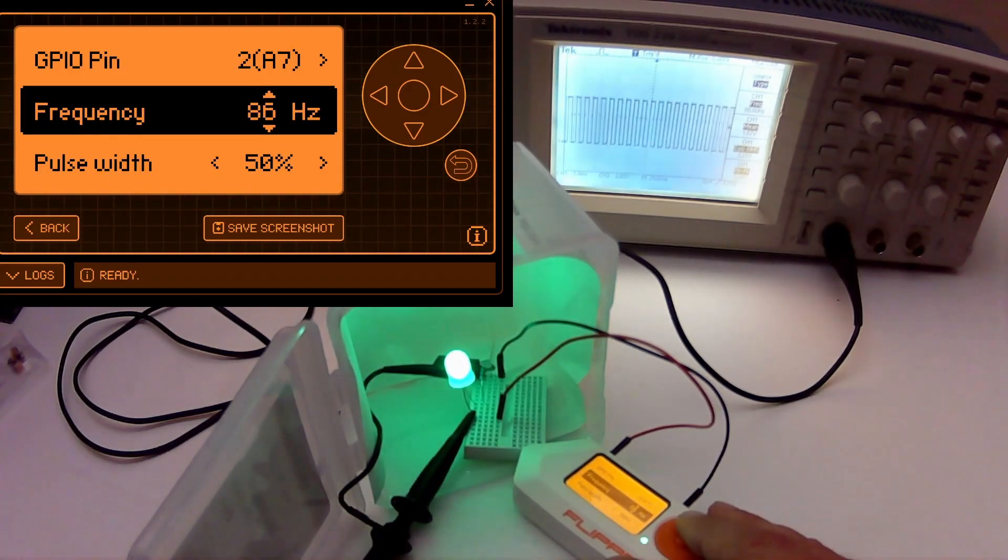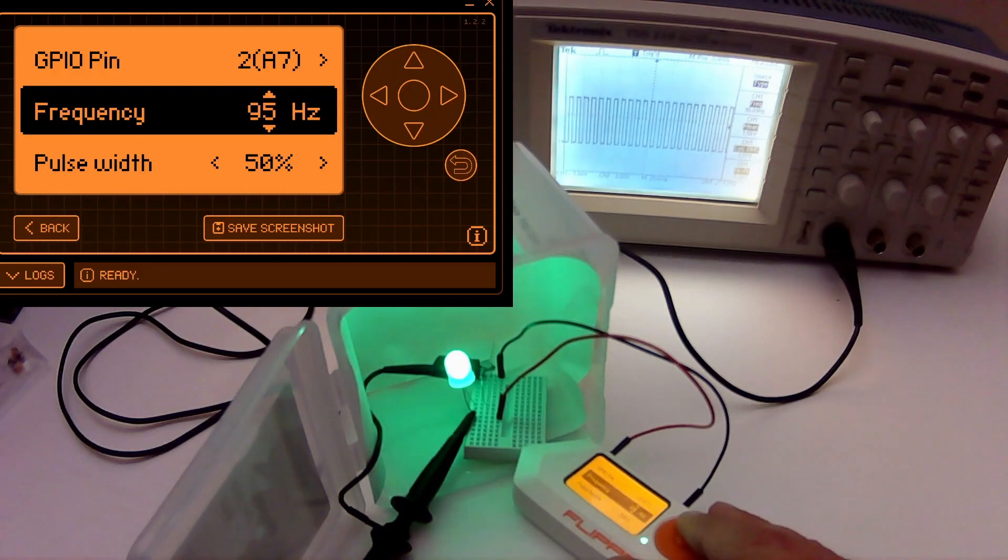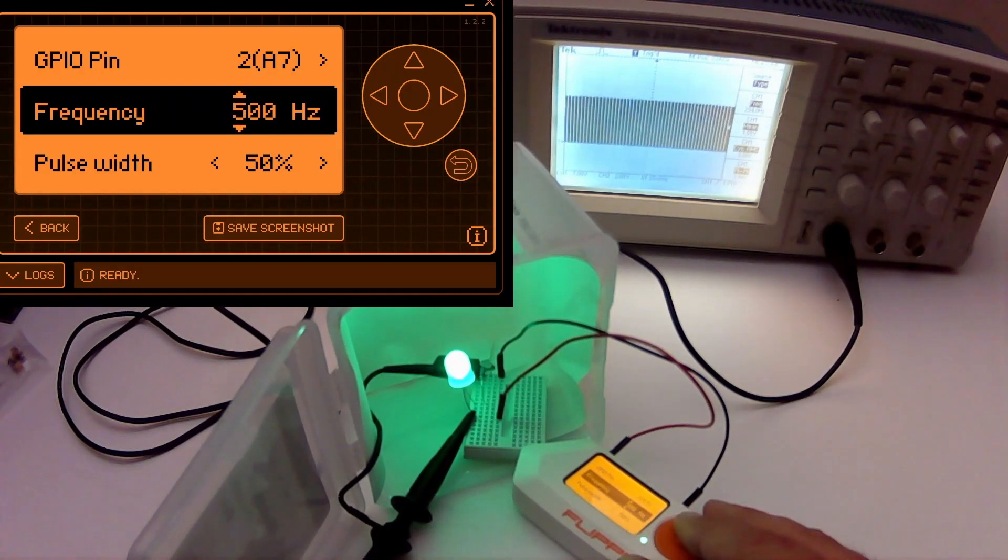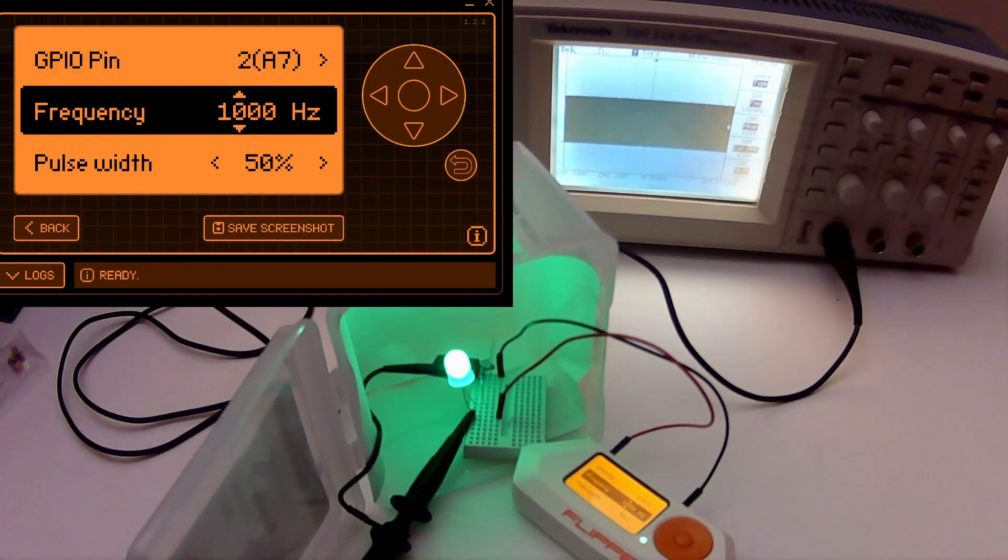Now we have the opposite effect where it looks solid to me but on the video you're starting to see some blinking. And now I'll go ahead and increase the frequency back up to the 1000 hertz. And now the light looks good both on the video and in person.